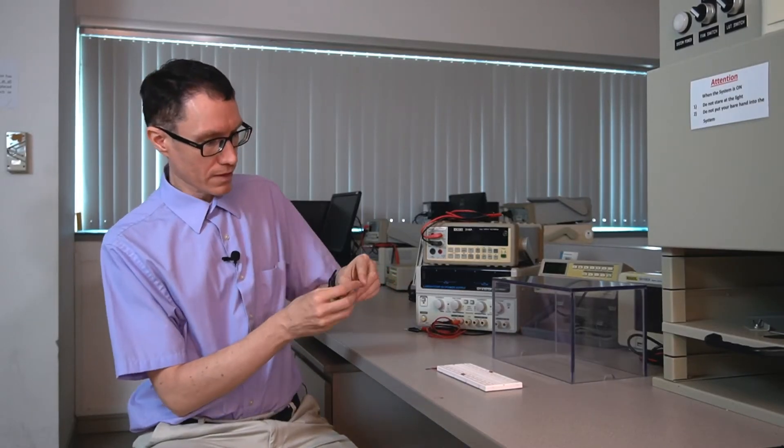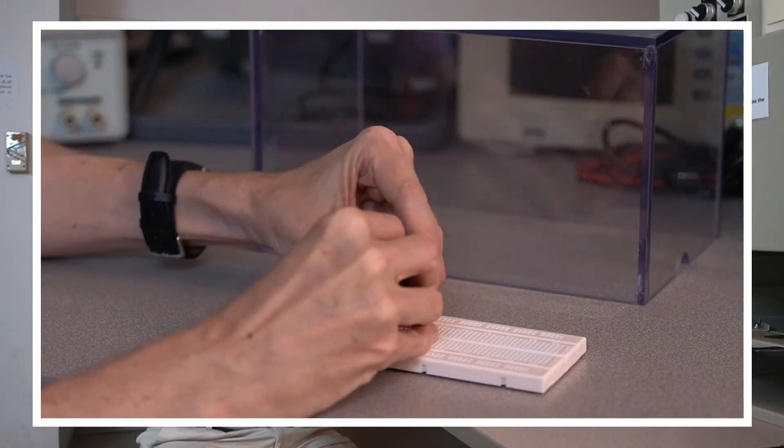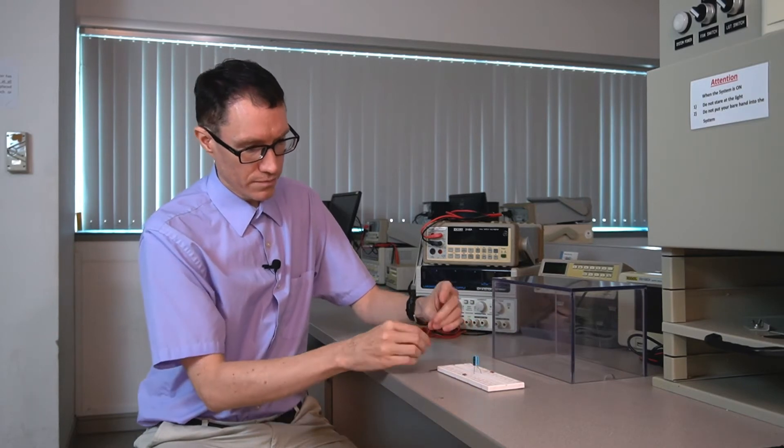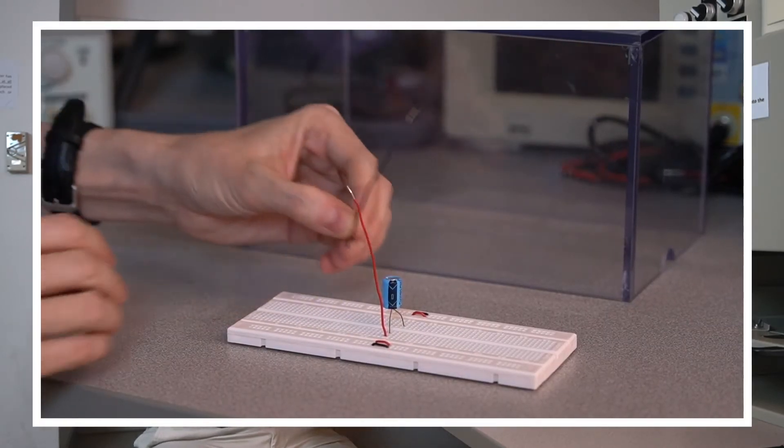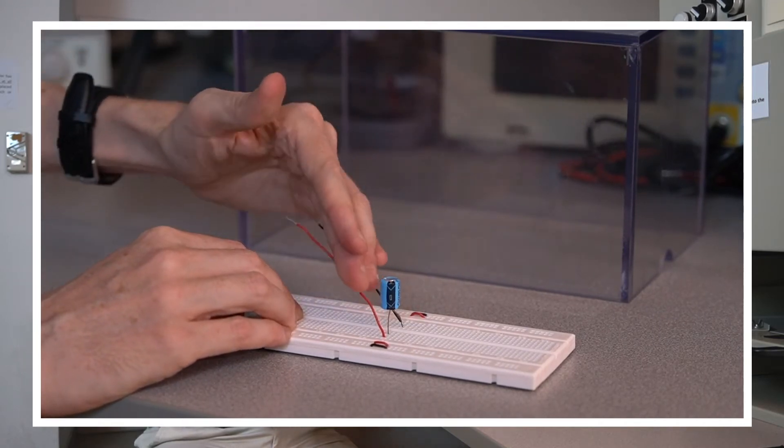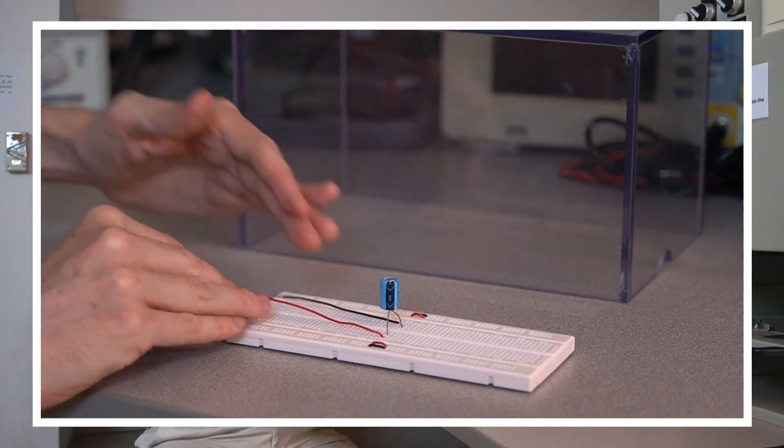I've got a breadboard and a DC power supply. Let's orient the capacitor so that we've got the minus side over here. I'm going to put a red wire on the minus side. I've got a black wire on the positive side, so I've done it backwards intentionally.